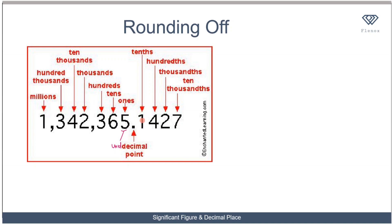After the decimal point, the first digit is the tenths - note the 'th' suffix to distinguish these. Then hundredths, thousandths, and ten-thousandths. Now let's take the number 35721 and round it to the nearest hundreds. I identify the hundreds digit, and I want everything after it to be zero. I look at the next digit after hundreds, which is 2.